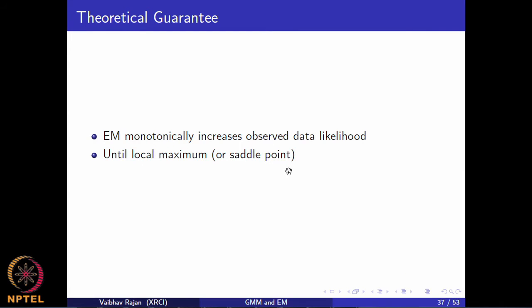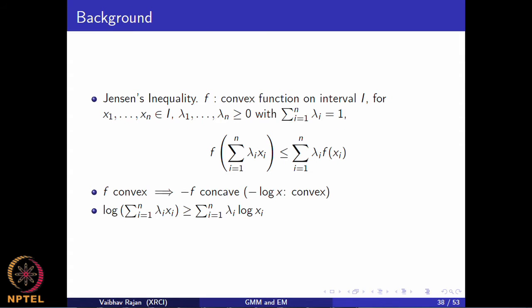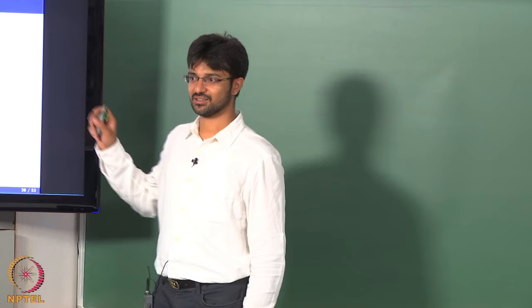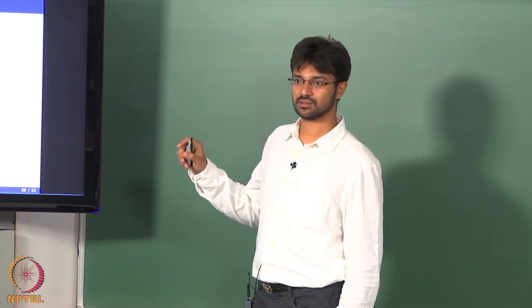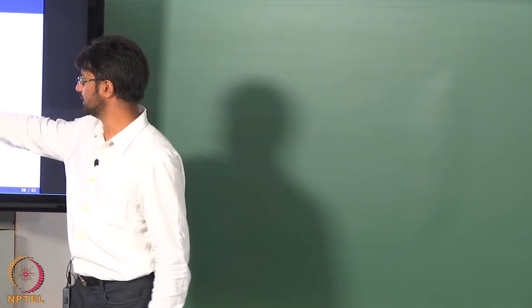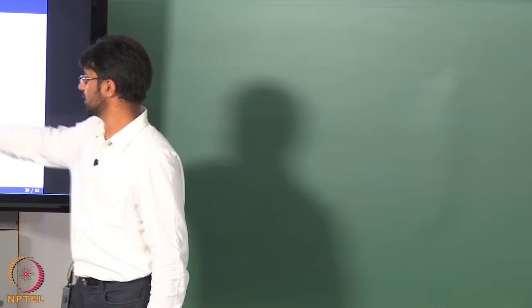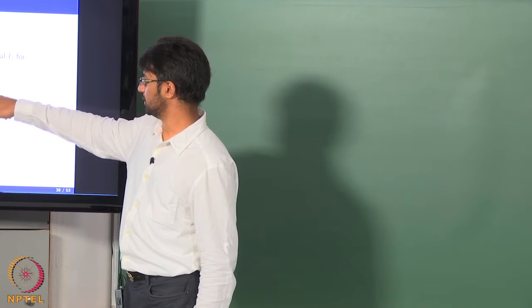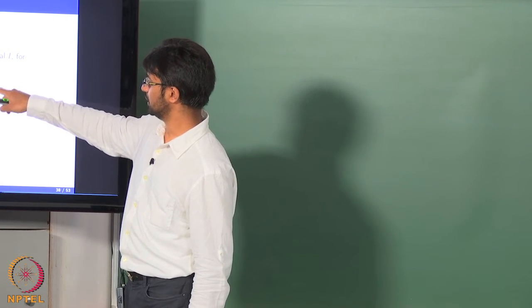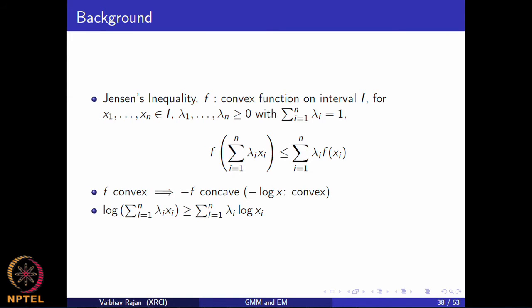Now let us prove that EM monotonically increases the likelihood in every iteration. The main result we need is Jensen's inequality. If you have a convex function and a linear combination of points x_i, then the convex function applied to the linear combination is less than or equal to the linear combination of f(x_i). For the logarithm function — since minus log x is convex — we get that log of a summation is always greater than or equal to the weighted sum of log x_i.